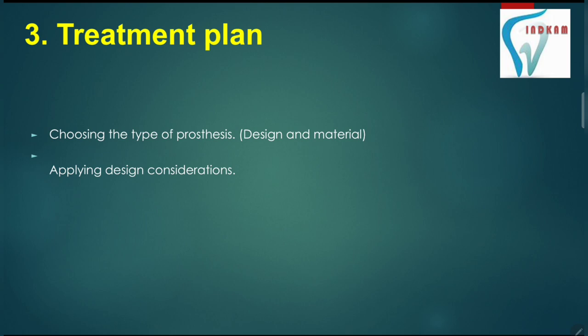The third step is treatment planning. Once we have surveyed the patient, diagnosed extraorally and intraorally, examined the patient, and poured the cast, then we will plan our treatment. In treatment planning, we have to choose the type of prosthesis we will be using in the patient, its design, and its material. Once the design and material is decided, we have to apply the design considerations.